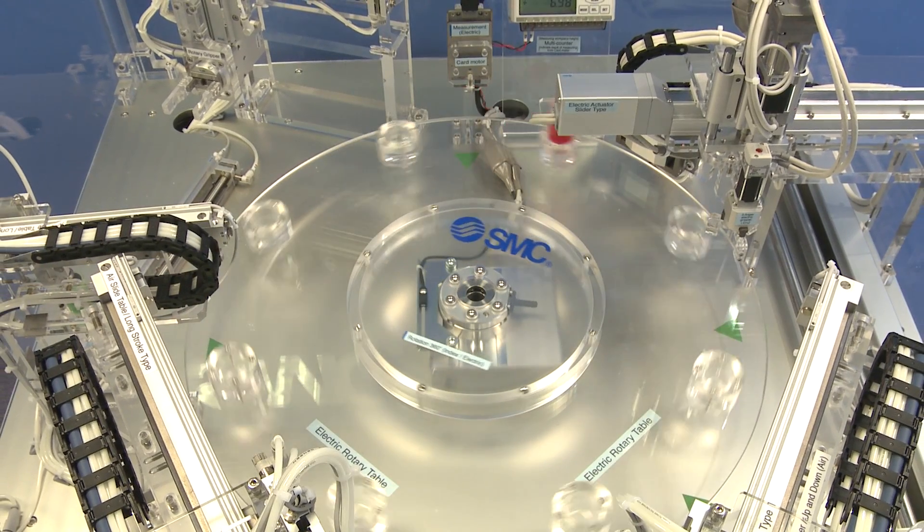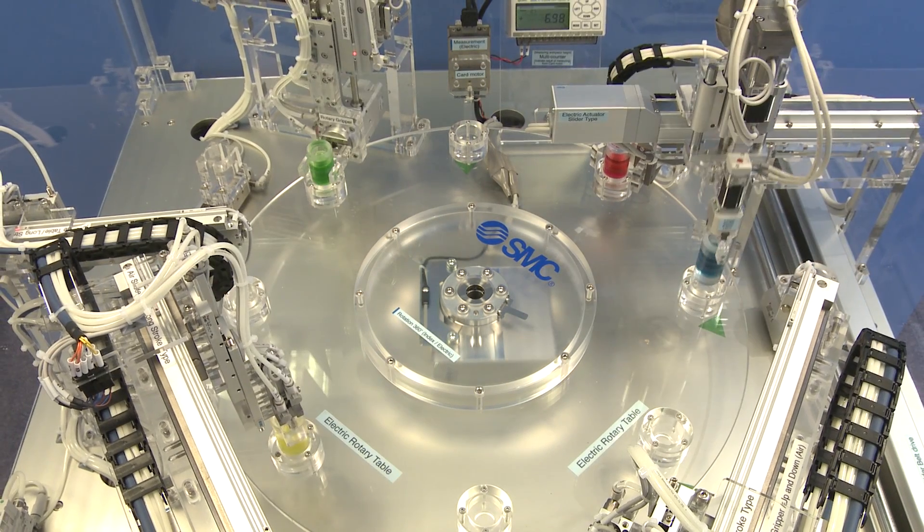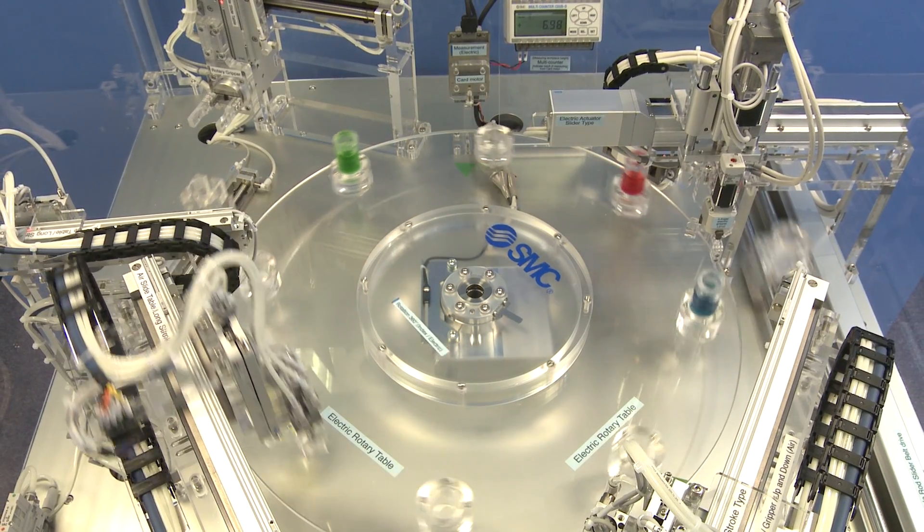First up, we have the LER electric actuator rotary table. This rotary table system allows up to 360 degrees motion as a continual action, so you can keep it going round and round.